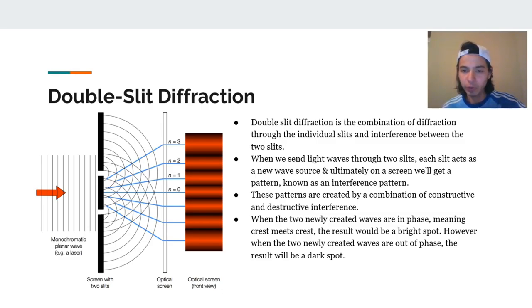However, when the two newly created waves are out of phase, it creates a dark spot. And we see here, right in between the two blue lines, if you draw a line, you will go to the dark spot. So that's one of the big components of double slit diffraction.